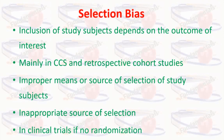In a clinical trial, selection bias can occur if there is no randomization. Suppose the principal investigator decides which patients go into the standard drug group and which into the new drug group. If allowed to do so, he might include all the healthy persons in the new drug group and all the sicker patients in the standard drug group, thereby showing better outcomes for the new drug group — results that would not be true.